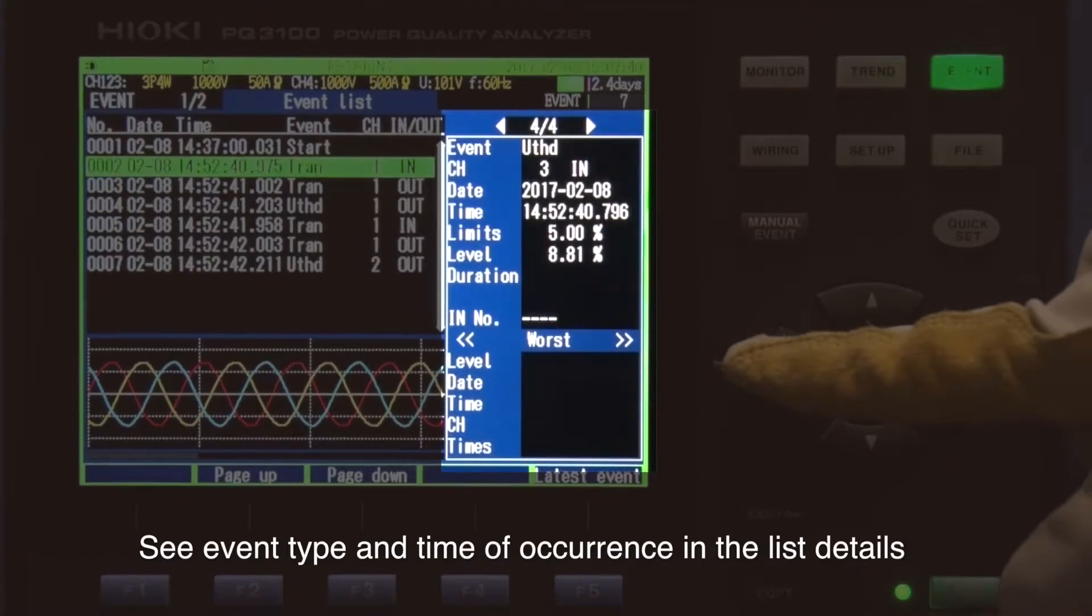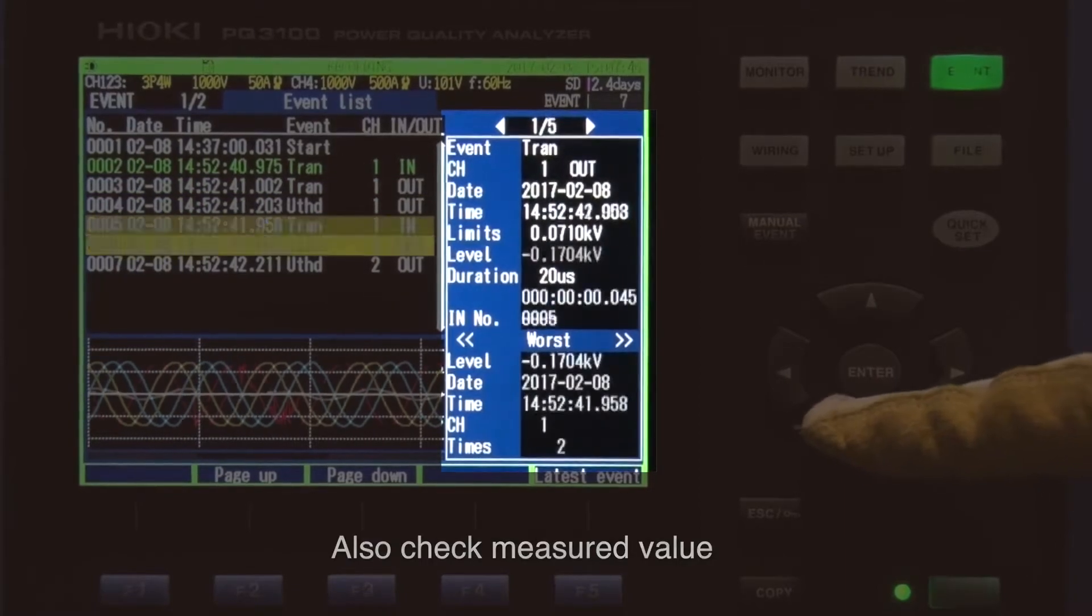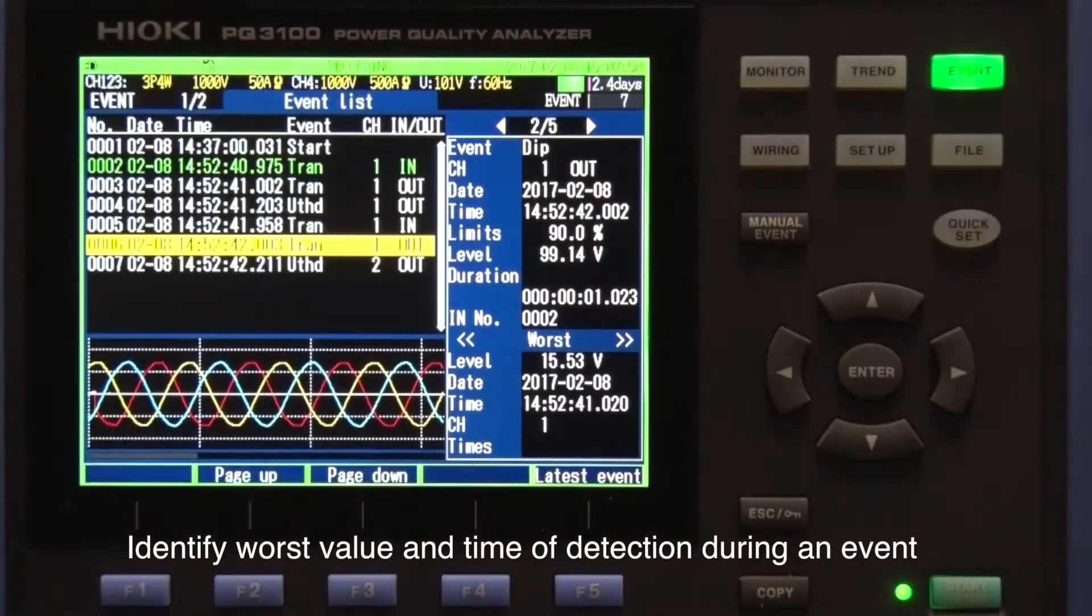View the event type, time of occurrence, as well as the measured value in the event list details. You can also identify the worst value as well as the time it occurred during an event.